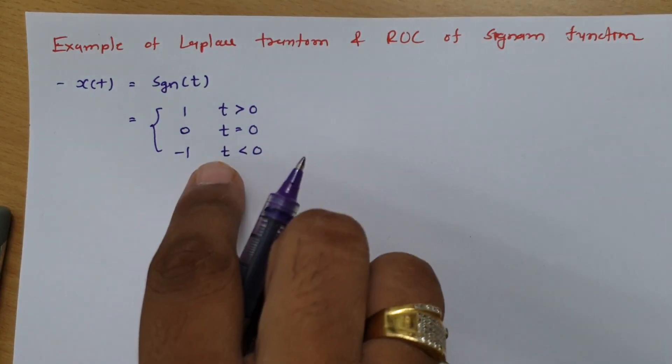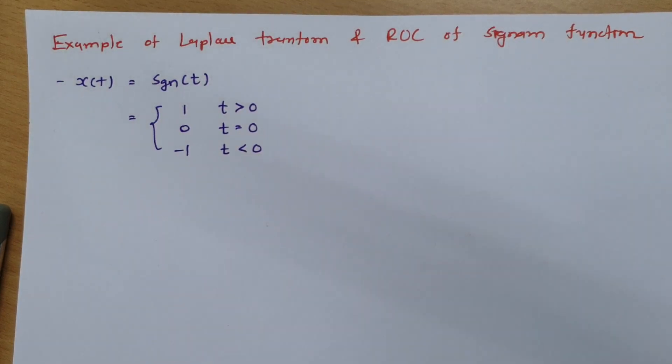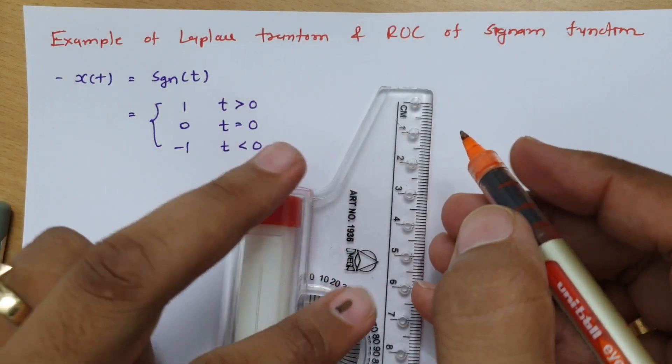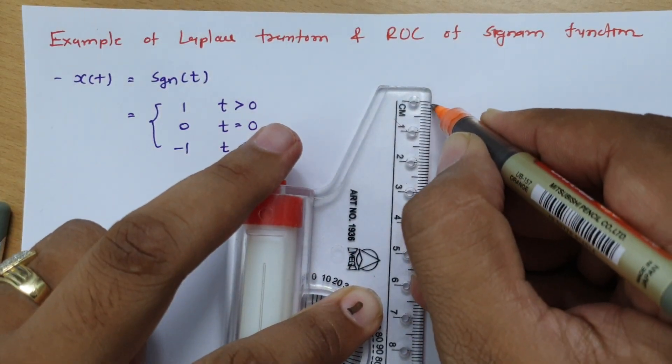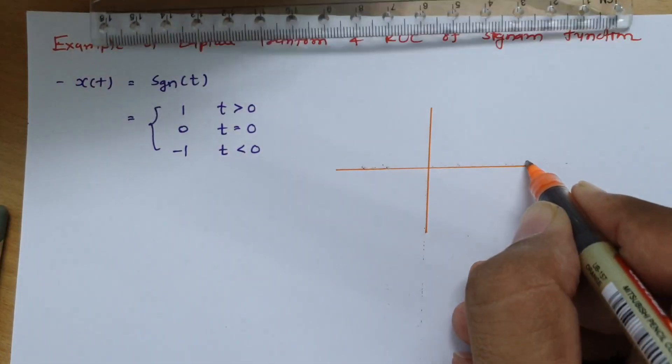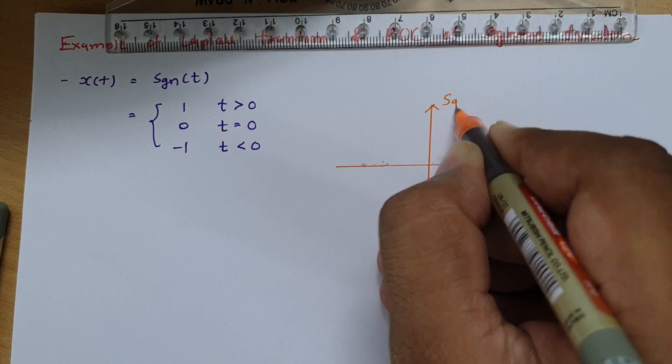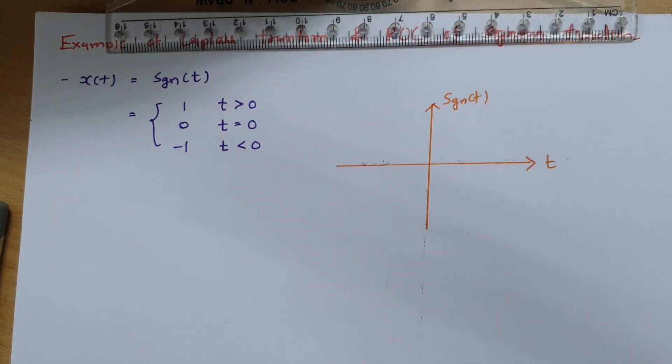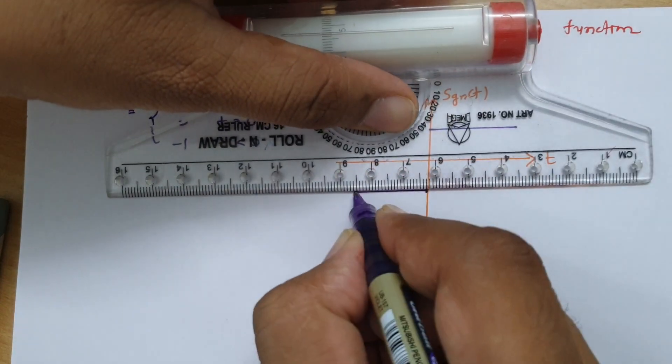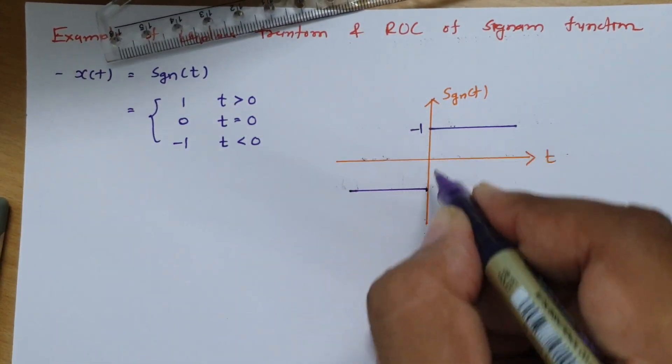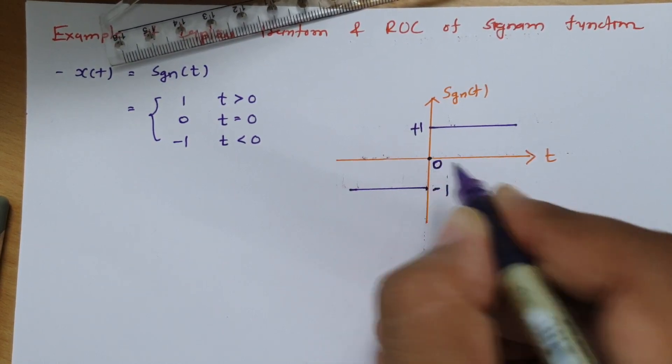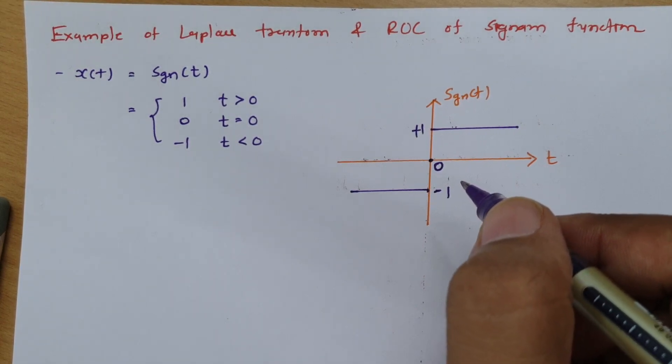Now here it is little tricky to understand this. So let us try to understand this with a diagram and then we will make it in form of signal. So here if you plot signum function with respect to time then you will be finding that signum function is like this where this is plus 1 and this is minus 1 and over here it is 0. So this is how it looks.